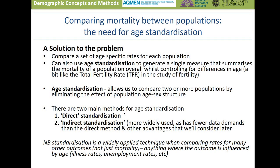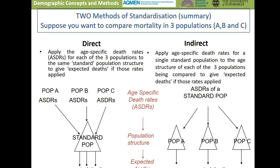There are two methods of standardization: direct and indirect. In the direct approach, if we're interested in comparing mortality in three different populations A, B, and C, we take the age-specific death rates for each of those populations and apply them to some standard population to develop a set of expected deaths. We can then compare the expected deaths across the three populations, confident that age structure isn't driving any differences because we've used the same population. Those expected deaths are the deaths that would be expected if the age-specific death rates of each population were applied to a standard population structure.